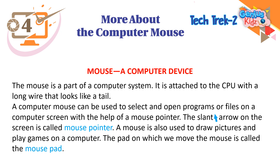Mouse — a computer device. The mouse is a part of a computer system. It is attached to the CPU with a long wire that looks like a tail. A computer mouse can be used to select and open programs or files on a computer screen with the help of a mouse pointer. The slant arrow on the screen is called the mouse pointer.